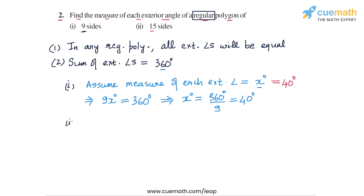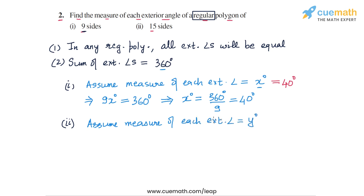Part 2 is very similar. We have a regular polygon of 15 sides. We assume that the measure of each exterior angle is equal to y degrees. The sum of all 15 exterior angles, each measuring y degrees, will be 15y degrees, and this sum should also be equal to 360 degrees.